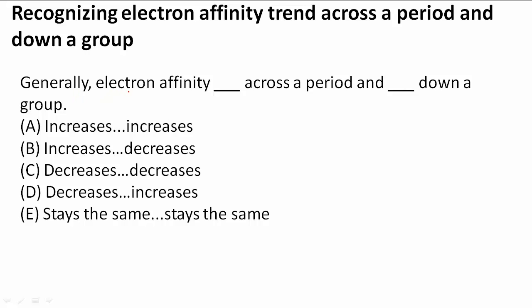So generally electron affinity across a period, when we go from left to right across a period we know that electron affinity increases because of the attractive force of the nucleus, so it increases.